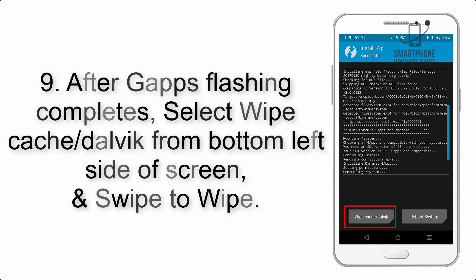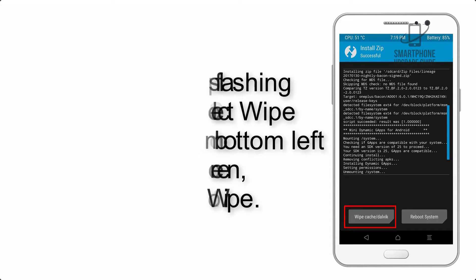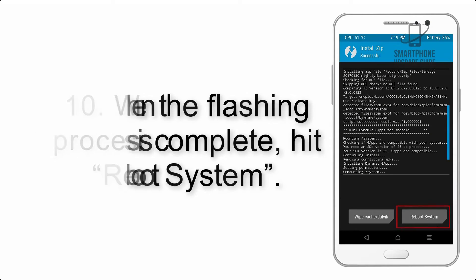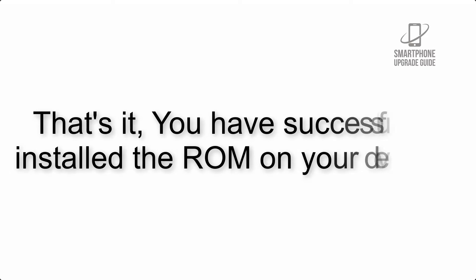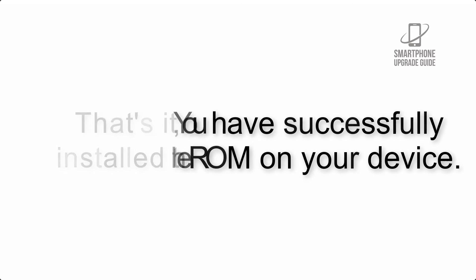Step 8: Flash the GApps zip package in the same manner. Step 9: After GApps flashing completes, select Wipe Cache and Dalvik from the bottom left side of the screen and swipe to wipe. Step 10: When the flashing process is complete, hit Reboot System. You have successfully installed the ROM on your device.